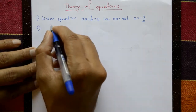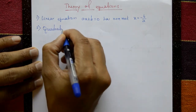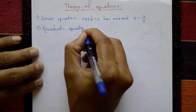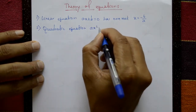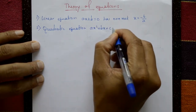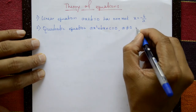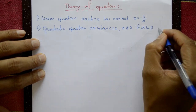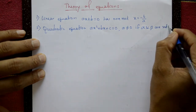Second one is a quadratic equation. The quadratic equation is ax squared plus bx plus c equals 0, where a is not equal to 0. If alpha and beta are the roots...